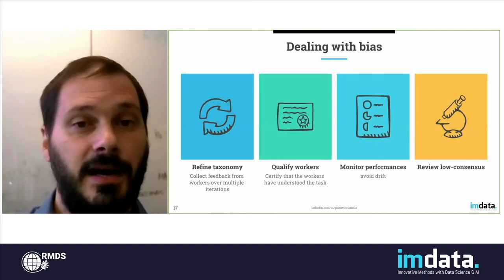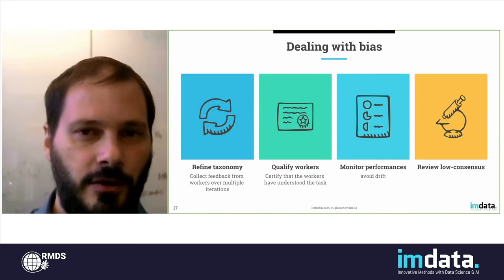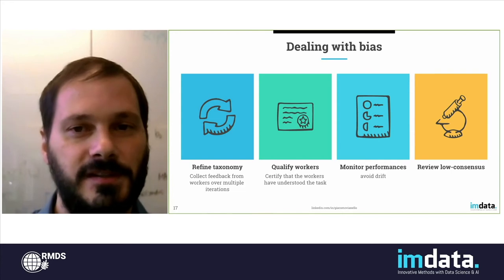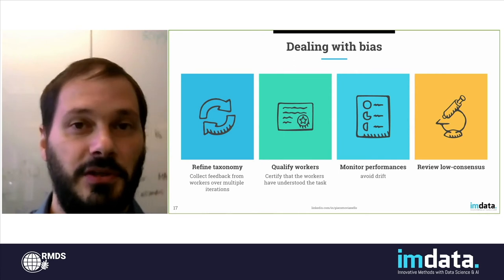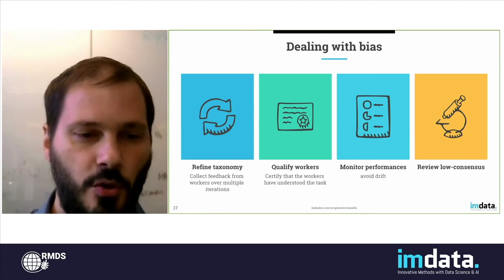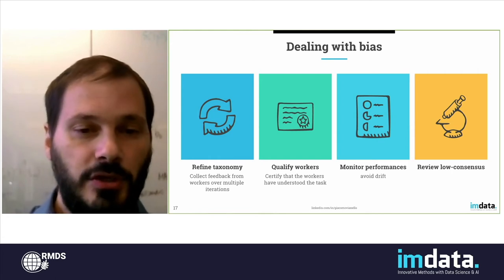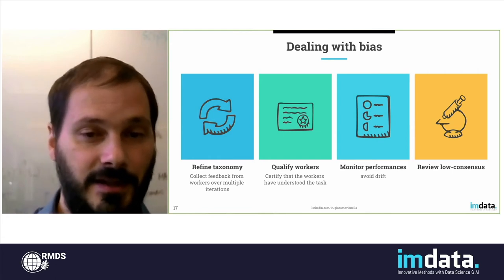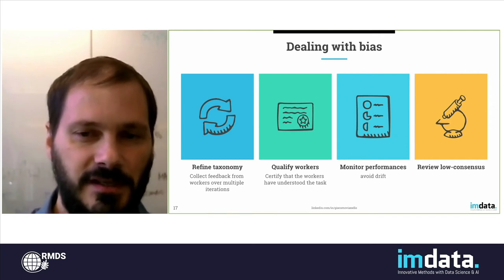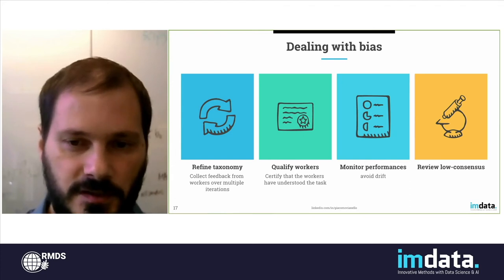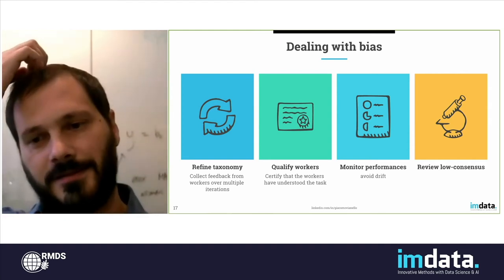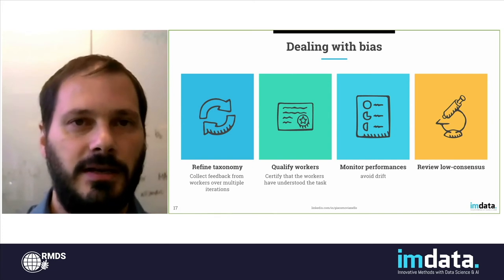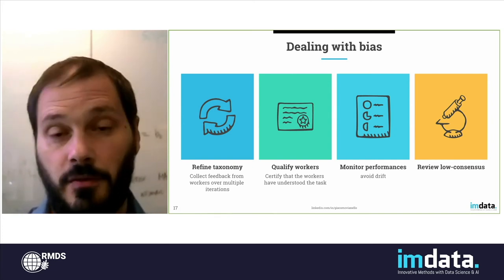Dealing with bias is even harder, because bias can also be called systematic error. To reduce it, you need to do several things. First, you need to refine your taxonomy — the definition of your task — collecting feedback from workers to eliminate all misunderstandings. You also need to qualify your workers to certify that they understood the task. But it's not enough to do this once, since ground truth campaigns can last weeks or months, so you have to keep monitoring your performance to avoid drift. And no matter what you do, you're going to have some low-consensus items that you'll need to review manually to figure out what is going on.